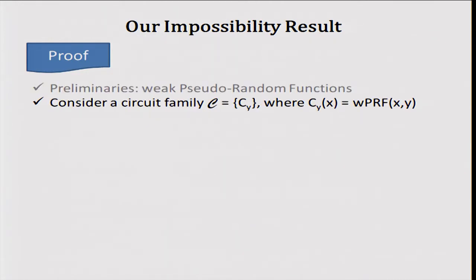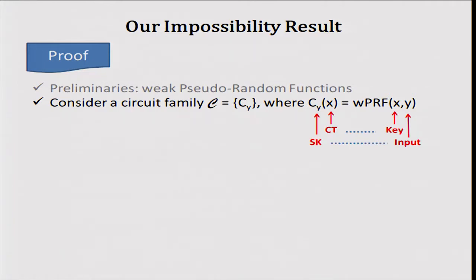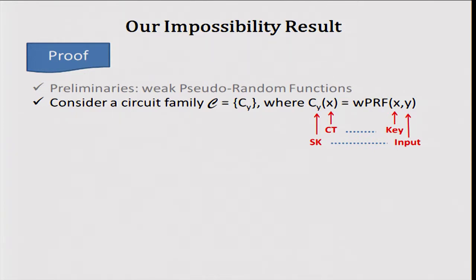Given this family of weak pseudorandom functions, consider a circuit family C defined as follows: C_y(x) is going to be this weak pseudorandom function evaluated on x and y. Here x is the key to the pseudorandom function, and in my impossibility result it's going to correspond to the ciphertext — the part that we want to hide. The input y is given to the adversary and corresponds to the secret key in my impossibility result.